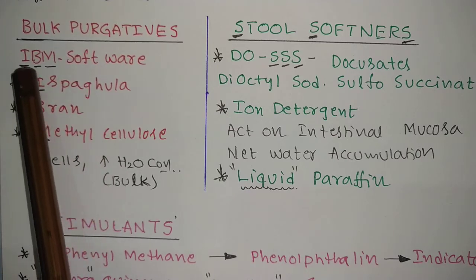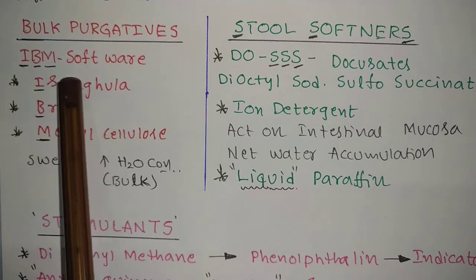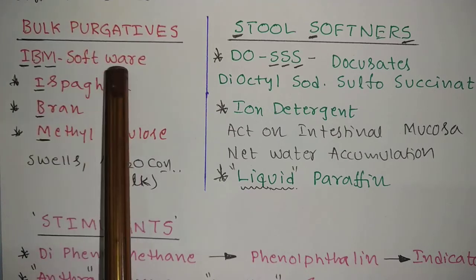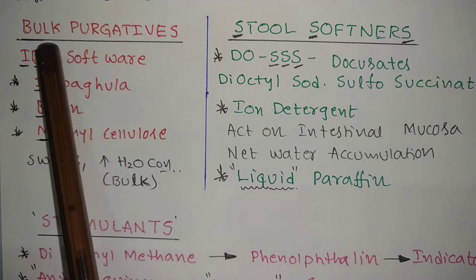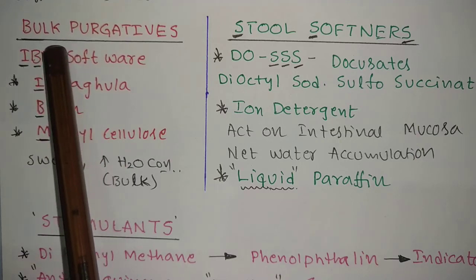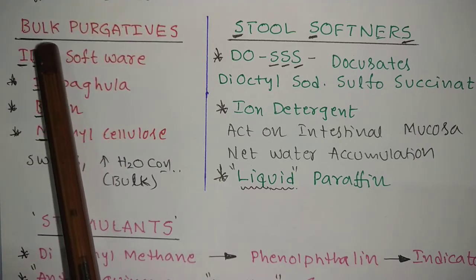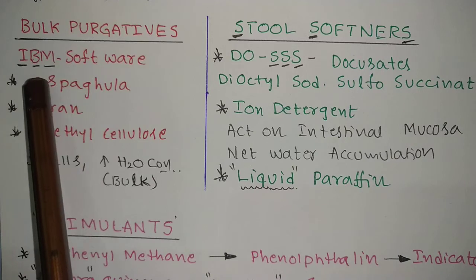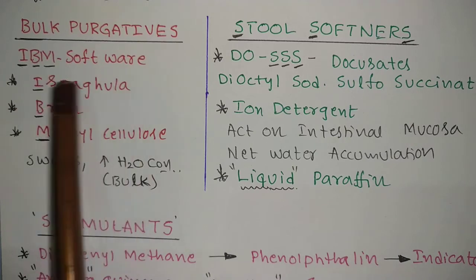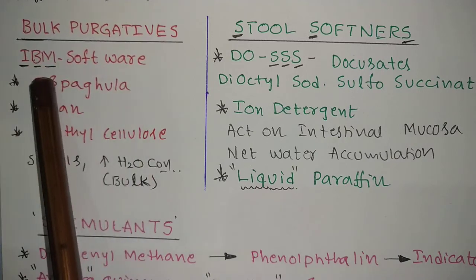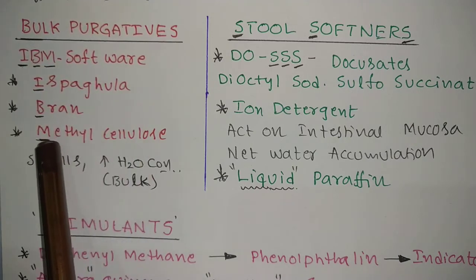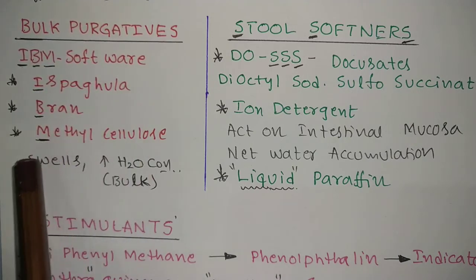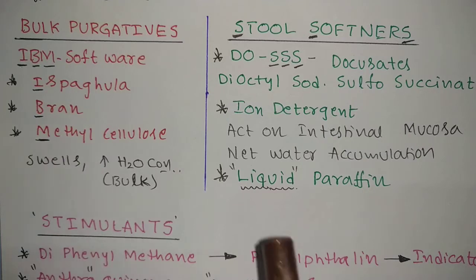As a mnemonic, think of IBM software company — they have a large, bulk number of employees. Similarly, bulk purgatives work by adding bulk in the intestine.